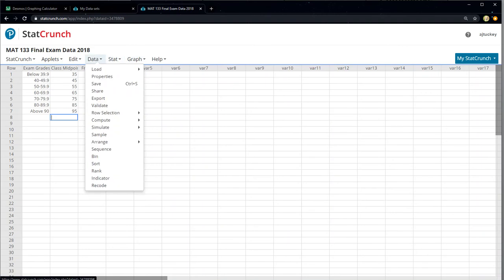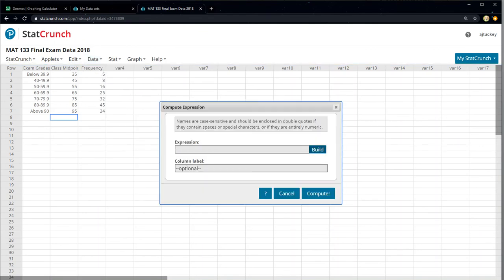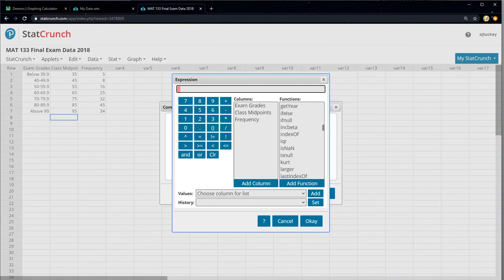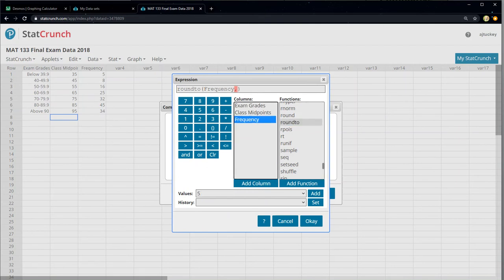So we want to go to data and we want to compute. I'm just letting my mouse hover. I'm not clicking on anything. And then I go over to expression and now I'm ready to click. So I want it to make an expression for me and I have to build it. I'm going to choose round two because I want it to round. I don't want to give me all the decimal places. And I want it to take the frequencies and I want it to divide by the sum of those frequencies, which was 165.